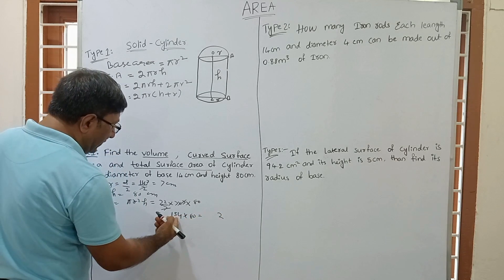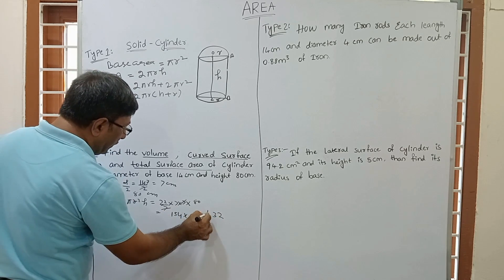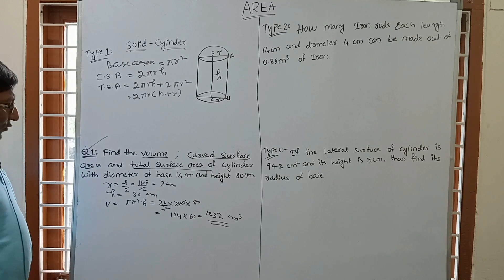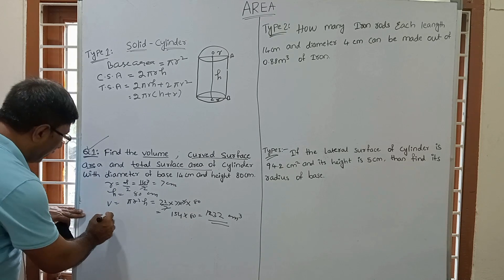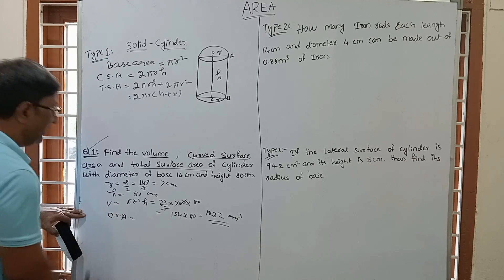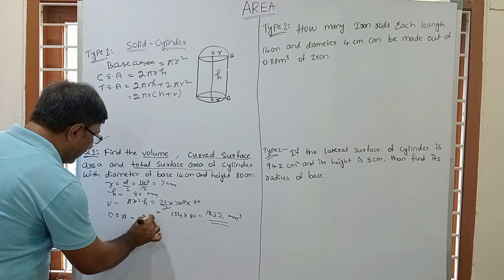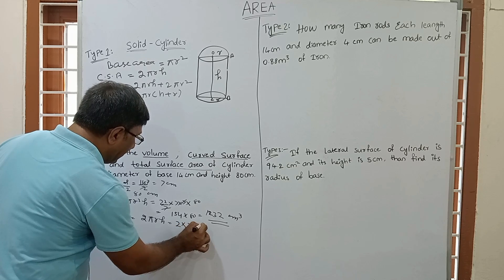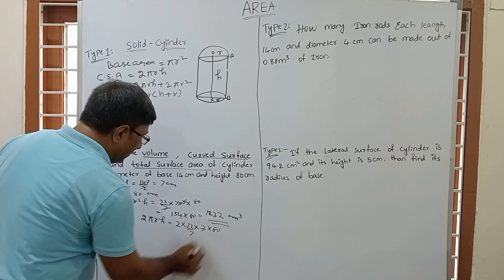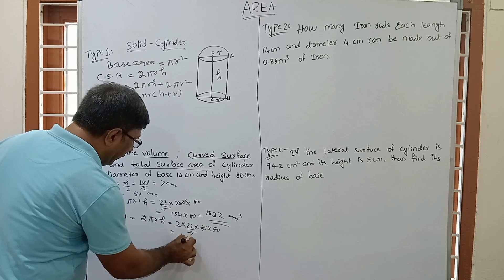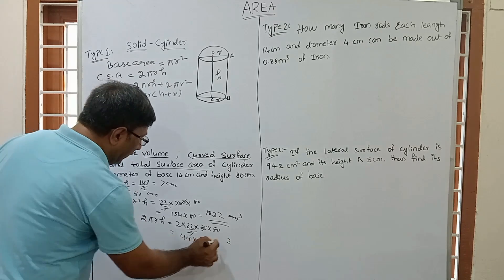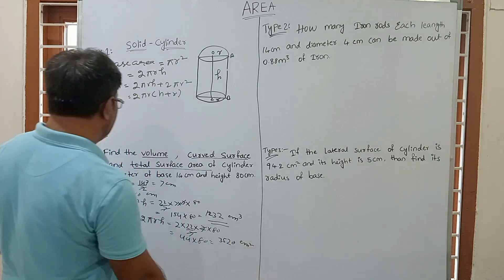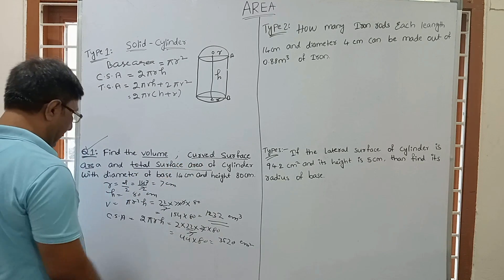Calculating: 22 × 7 × 80 = 12,320 cm³. So volume is 12,320 cm³. Now we have to find curved surface area (CSA). CSA = 2πRH = 2 × 22/7 × 7 × 80. The 7 cancels, giving 44 × 80 = 3,520 cm². This is the curved surface area.